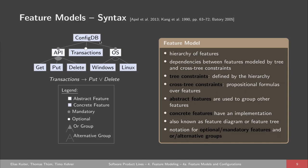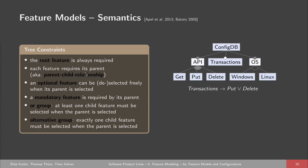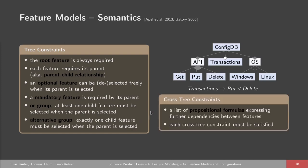One final thing is that transactions only work in a writable database, expressed as a cross-tree constraint below the feature model: if transactions are selected, we have to select put or delete. You might notice this is a propositional formula. We can use these kinds of formulas to specify all kinds of dependencies. The root feature is always required; each feature requires its parent; optional features can be freely selected when the parent is selected; mandatory features are always required. For a configuration to be valid, each cross-tree constraint also has to be satisfied.